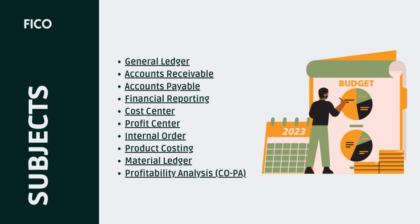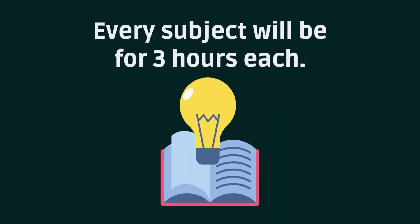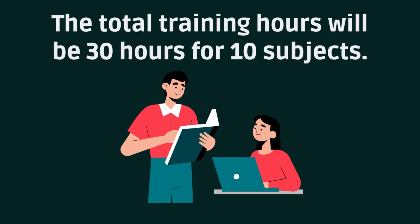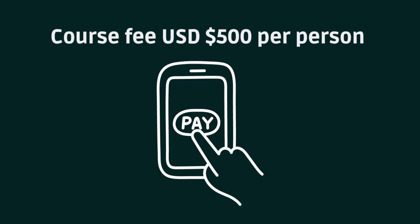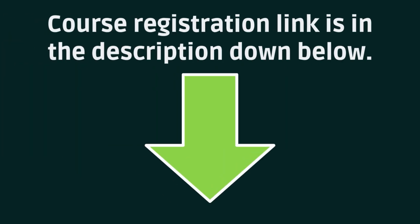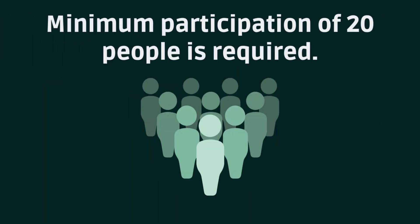The structure of the training class will be three hours per subject. The total training hours will be 30 hours for 10 subjects, at one hour per day for 30 days. The cost fee will be $500 per person, payable to my bank account in the US. The link will be available in the YouTube description. I need a minimum participation of 20 people to start the class.